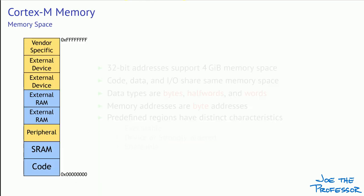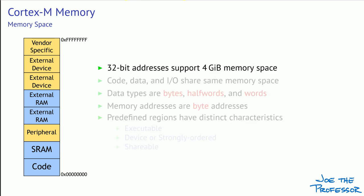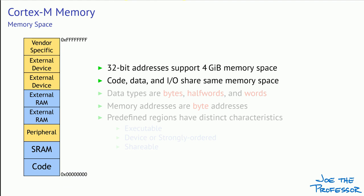Now let's talk about the Cortex-M memory space. The Cortex-M processors have a full 32-bit address that supports 4 gibibytes — that's 4 times 2 to the 30th bytes — of memory space. So memory addresses range from 32 bits all zeros to 32 bits all ones, that's 8 Fs (FFFFFFFF). An important aspect of the Cortex-M architecture is that code, data, and I/O devices share the same memory space. So I/O devices are memory mapped, and code and data appear to be part of the same memory space, even though the physical buses that communicate with them may be different.